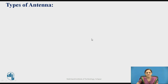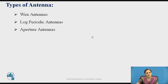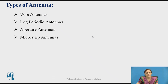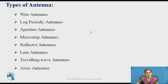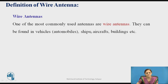Some of the types of antennas are: wire antennas, log periodic antennas, aperture antennas, microstrip antennas, reflector antennas, lens antennas, travelling wave antennas, and array antennas. It is not possible to cover all types in this session, so we will discuss wire antennas and travelling wave antennas.